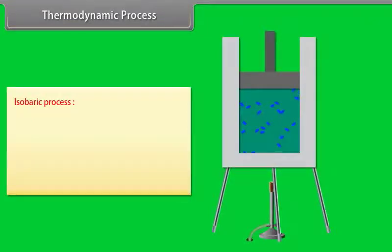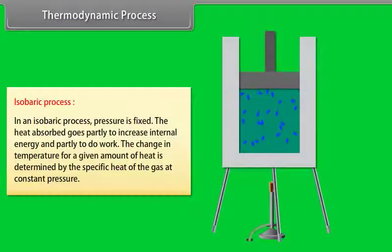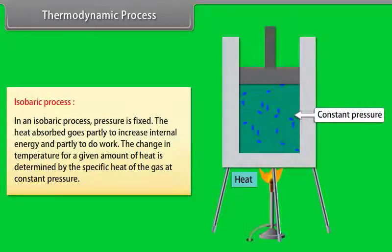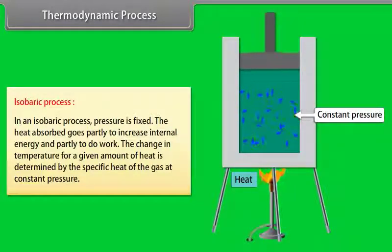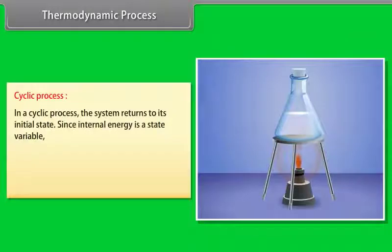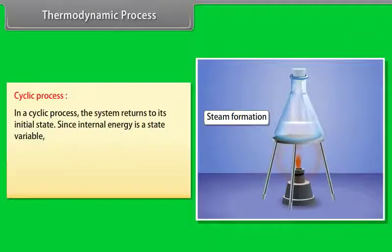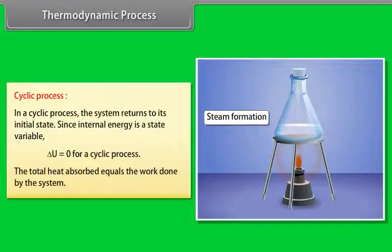Isobaric process: pressure is fixed; heat absorbed goes partly to increase internal energy and partly to do work; the change in temperature is determined by the specific heat at constant pressure. Cyclic process: the system returns to its initial state; since internal energy is a state variable, ΔU = 0 for a cyclic process; the total heat absorbed equals the work done by the system.